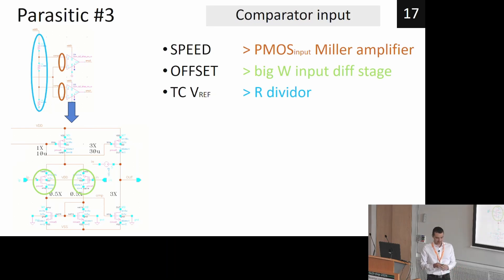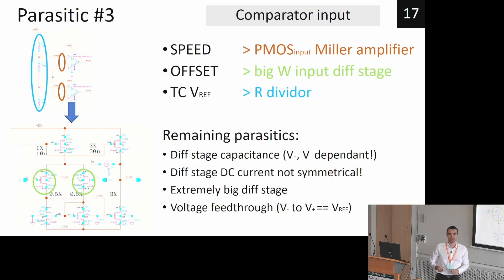resistor divider. But here now we see that remaining parasitics are mainly due to the input differential stage because of the big size. It has big capacitance, the currents are not symmetrical, and the voltage feedthrough is causing the signal coming from minus to plus, or to our reference voltage.